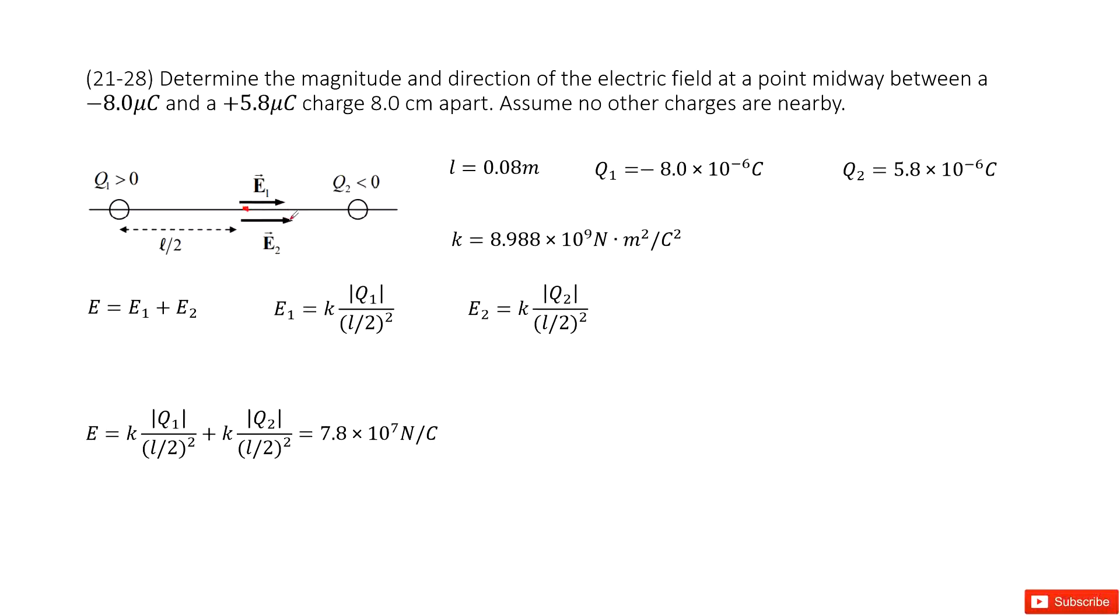Now you can see, as we talked about, electric field is a vector. If we want to add two vectors together, we consider the direction. They are in the same direction, the x-direction. So we can just consider the magnitude of E1 and magnitude of E2, add them together, and we get the total electric field at the middle point.